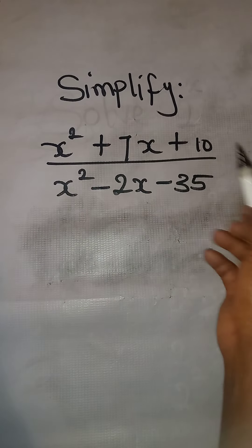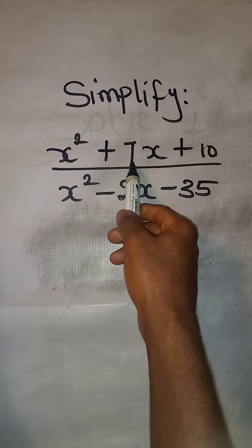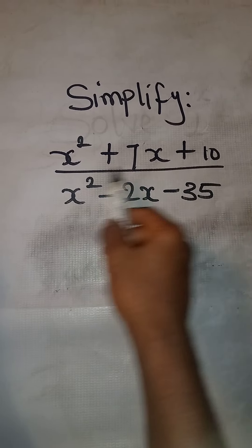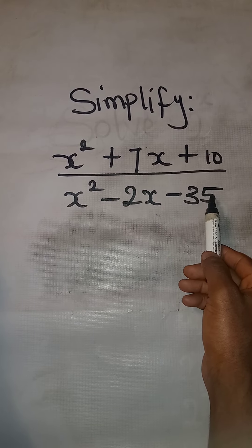Hello viewers. Simplify x squared plus 7x plus 10 all over x squared minus 2x minus 35.